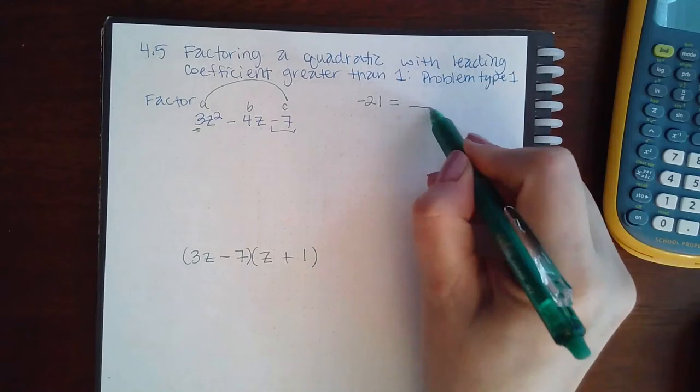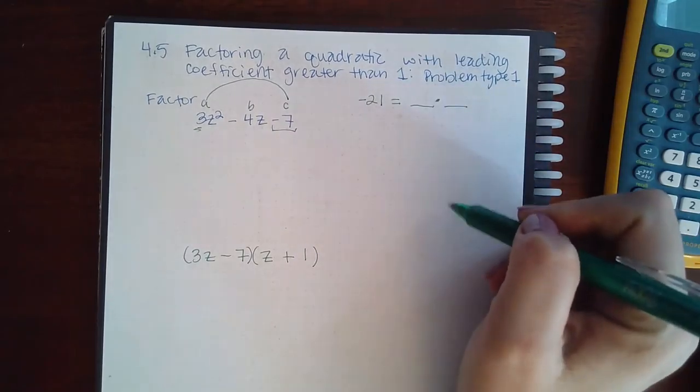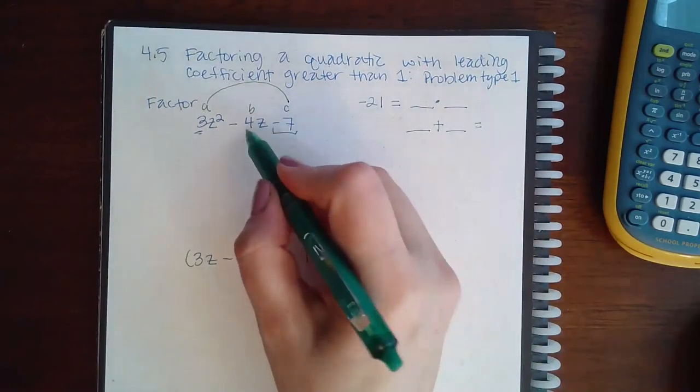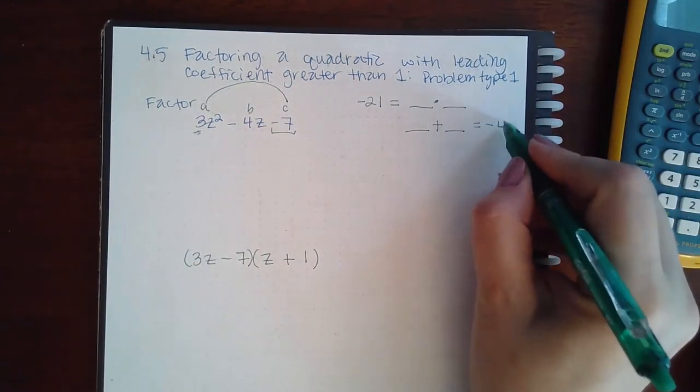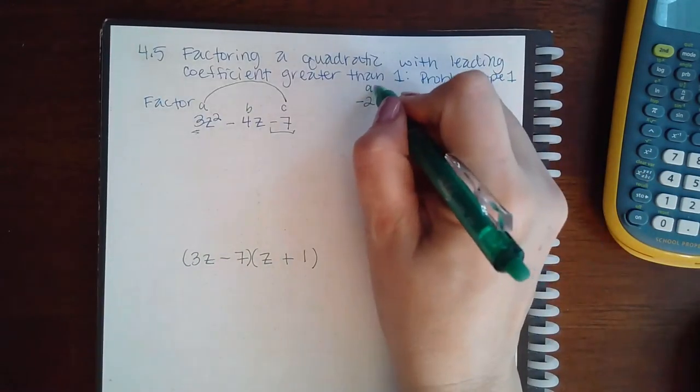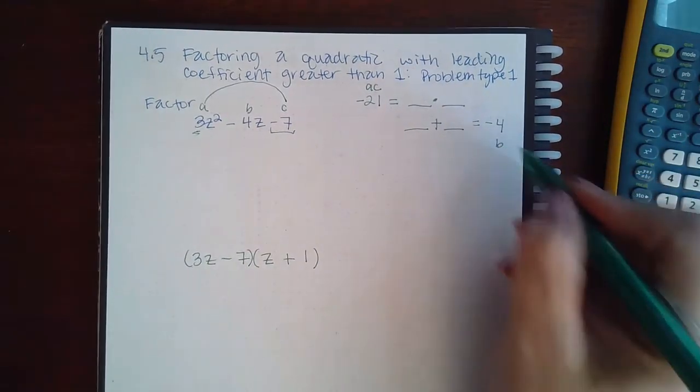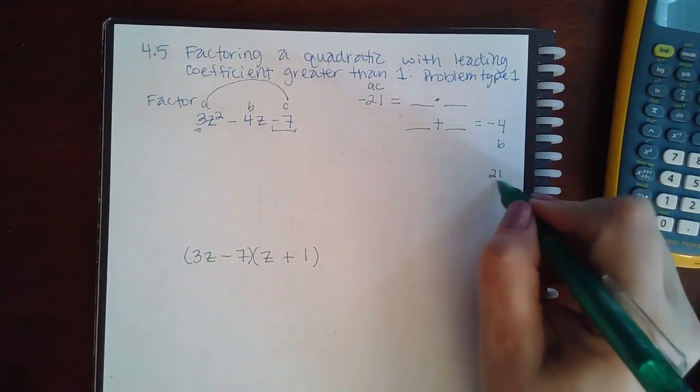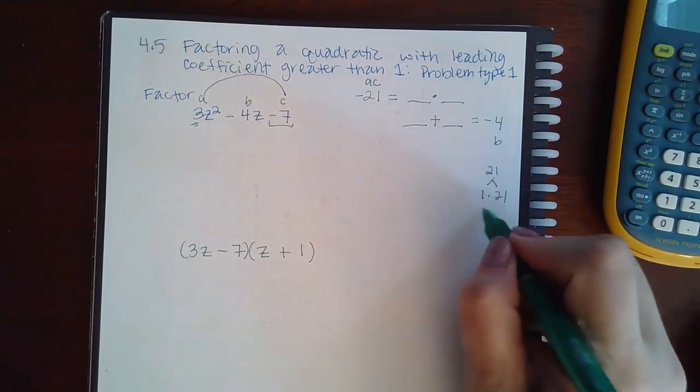What is 3 times negative 7? That's negative 21. I want to figure out what multiplies to give me 21 but adds to give me the middle term b, which is negative 4. So this is AC, a times c, and this guy is b, so I am using everybody.